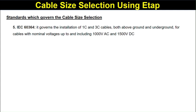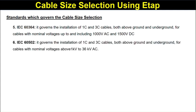IEC 60364 governs the installation of single-core and three-core cables both above ground and underground for cables with nominal voltage up to and including 1000 V AC and 1500 V DC. IEC 60502 governs the installation of single-core and three-core cables both above ground and underground for cables with nominal voltage above 1 kV up to 36 kV AC.